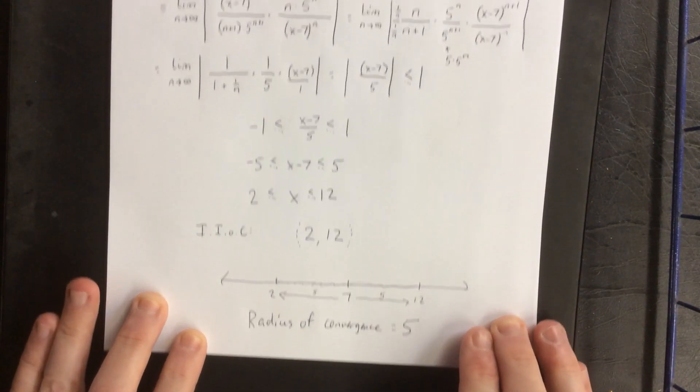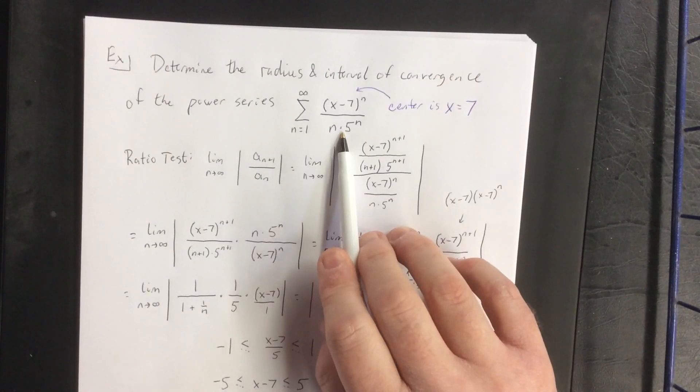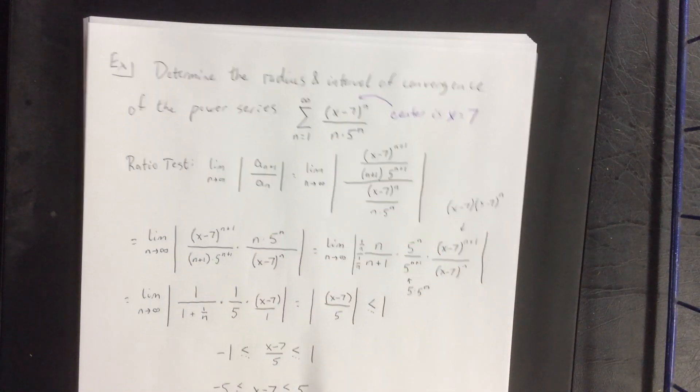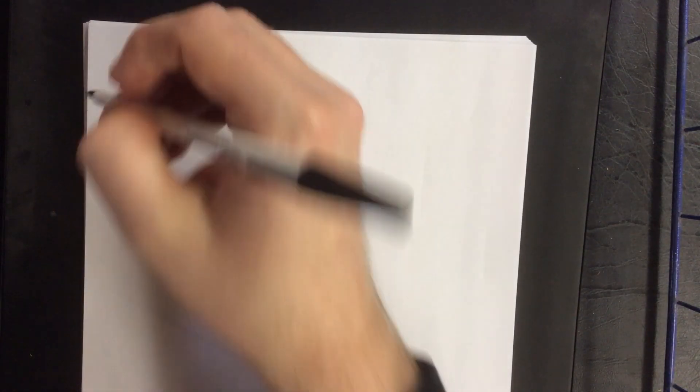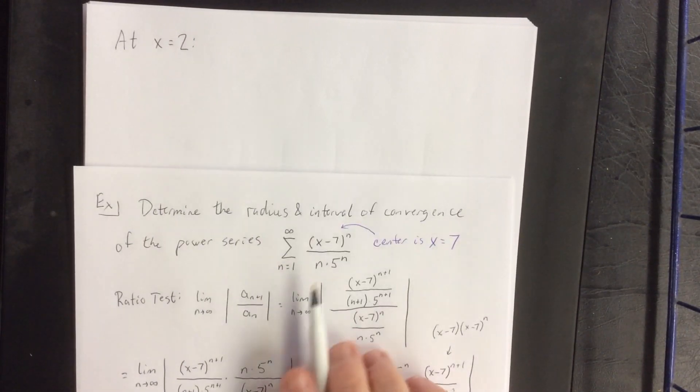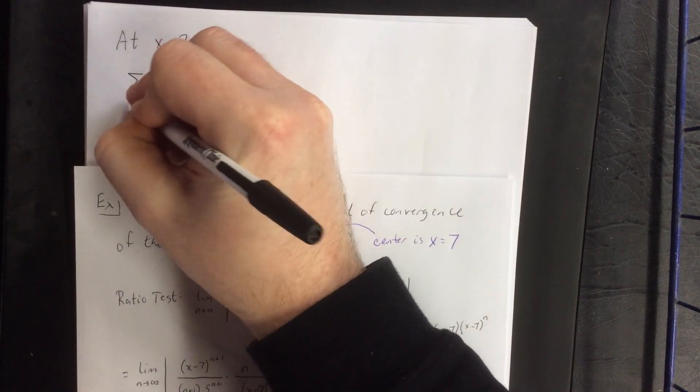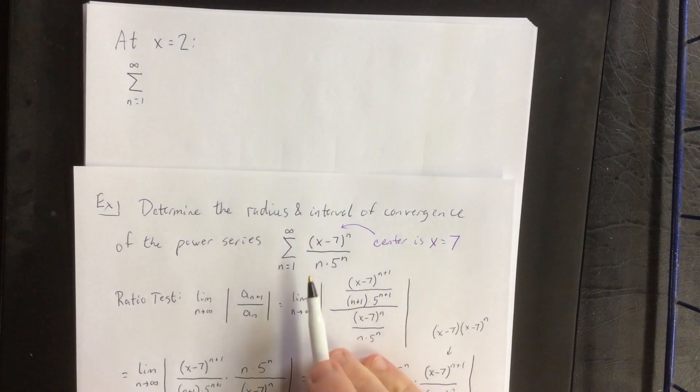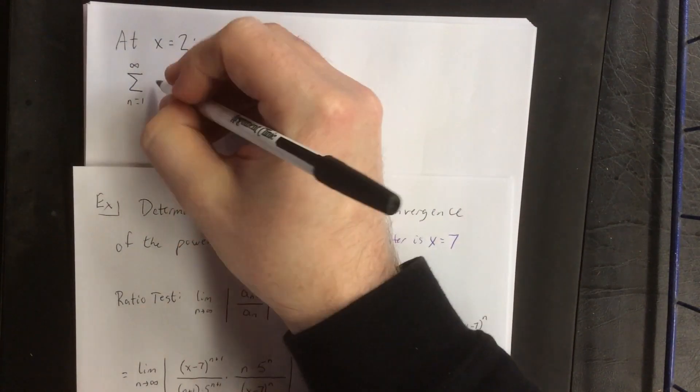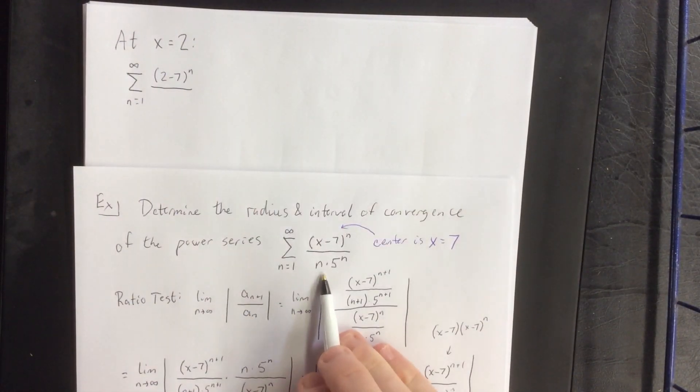Now to determine whether or not the endpoints are included, I am going to plug 2 and 12 back into the original series and see if the series that we get converges or diverges. So we'll start with at x equals 2, the lower endpoint. I'll be plugging x equals 2 back into the original series. So with that in mind, this will become the sum from n equals 1 to infinity of 2 minus 7 raised to the n power divided by n times 5 to the n.